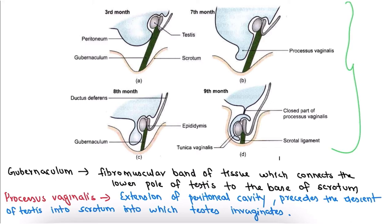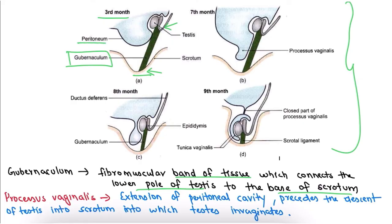These are the four images you would have to draw during the anatomy university exam. Starting with the third month, the testis is connected to the base of the scrotum by a structure called the gubernaculum — a fibromuscular band of tissue which connects the lower pole of the testis to the base of the scrotum. You can also clearly see the peritoneum in this image.